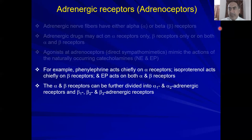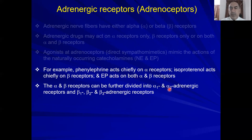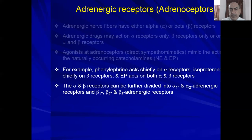Please remember these drug names, as they will recur throughout pharmacology. Phenylephrine is an alpha agonist. Isoproterenol is a selective beta agonist. Epinephrine acts on everything — alpha-1, alpha-2, beta-1, beta-2, beta-3.